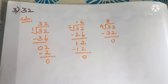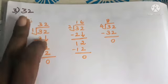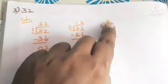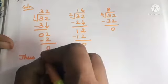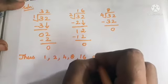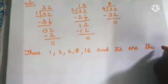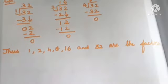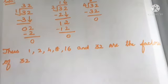Checking 5, 6, 7, 9, 10 — none give 32 as a product. Thus 32 has factors: 1, 2, 4, 8, 16, and 32.